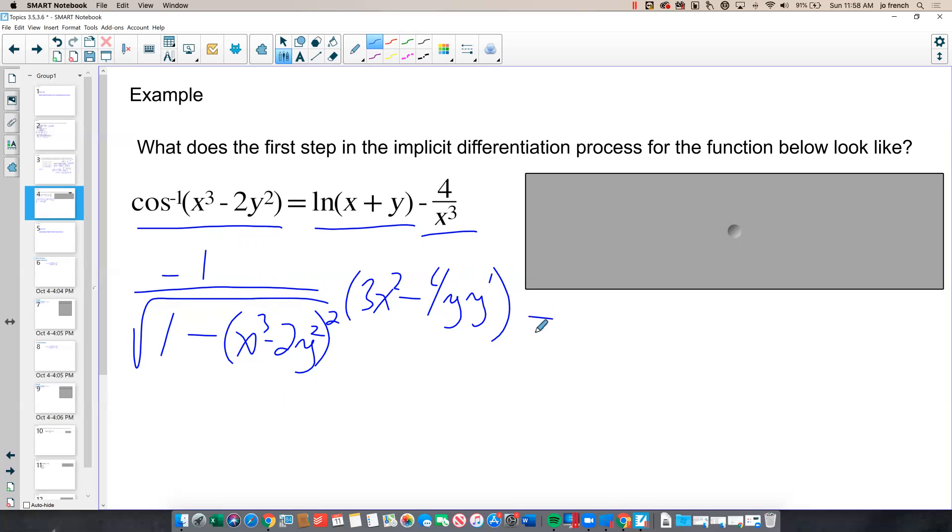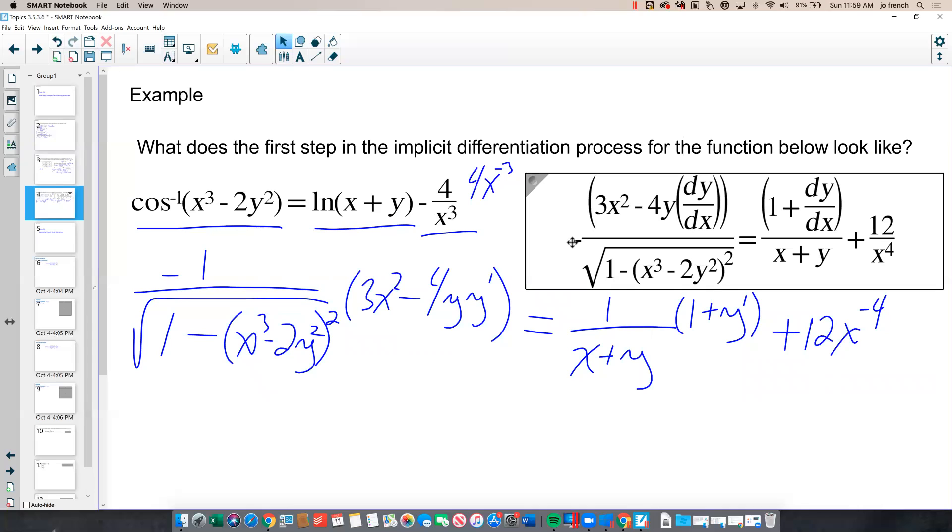Now, I have to apply my rules to the right hand side. The derivative of the natural log of something is 1 over the something, so 1 over x plus y, times the derivative of the something. The derivative of x is 1, and the derivative of y is y prime, or dy dx. And then I'm subtracting the derivative of 4 over x cubed. 4 over x cubed could also be written as 4x to the negative 3. So, I bring down the negative 3 and this actually becomes a positive 12x to the negative 4. And that's what our first step would look like before we solved for y prime.